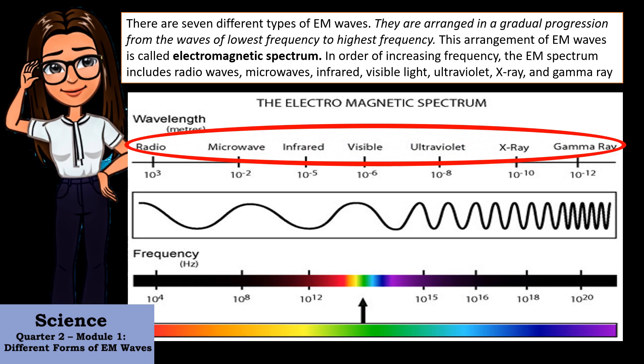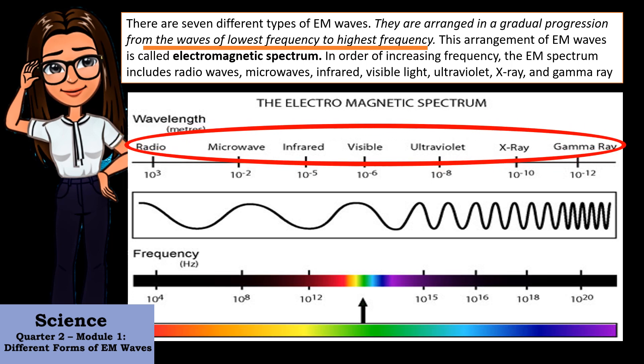There are seven different types of EM waves. They are arranged in a gradual progression from the waves of lowest frequency to highest frequency. This arrangement of EM waves is called the electromagnetic spectrum. In order of increasing frequency, the EM spectrum includes radio waves, microwaves, infrared, visible light, ultraviolet, X-ray, and gamma ray.